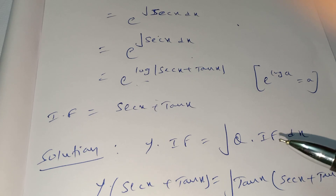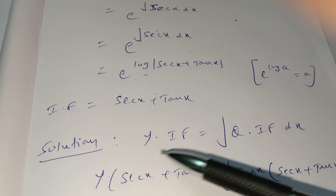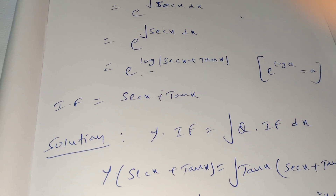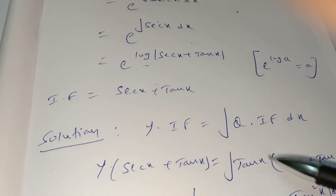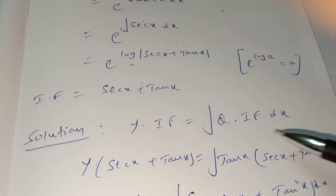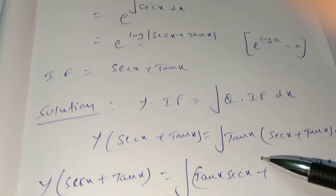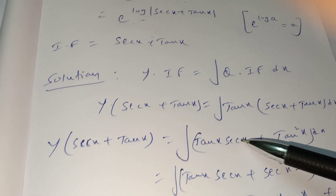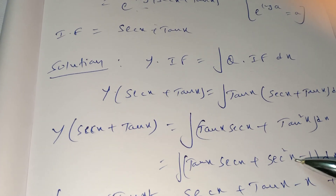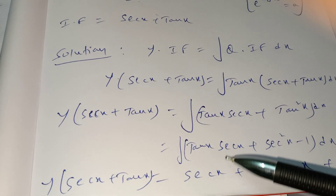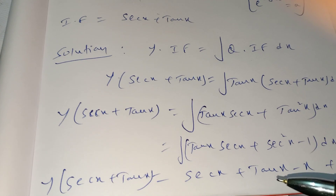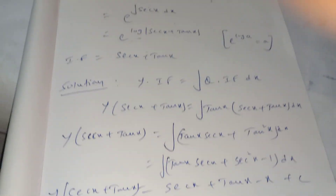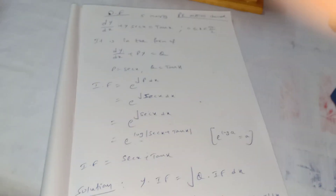Using the solution formula y × IF = ∫Q × IF dx, substituting IF = sec(x) + tan(x) and Q = tan(x): the right side becomes ∫tan(x)·(sec x + tan x) dx = ∫[tan(x)·sec(x) + tan²(x)] dx. Writing tan²(x) = sec²(x) − 1 and integrating gives sec(x) + tan(x) − x + C. This is the complete five-mark solution.